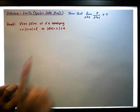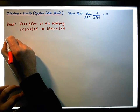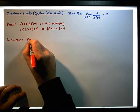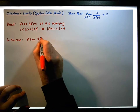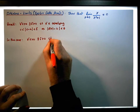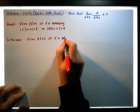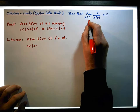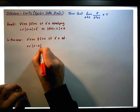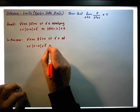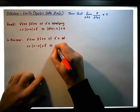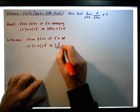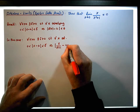In this case, what we'd like to show is: for each and every epsilon greater than 0, there exists a delta greater than 0, such that for each and every x satisfying the condition that 0 is less than the absolute value of x minus 0 — since x is tending to 0 — and less than delta, this implies that the absolute value of x over x squared plus 1 minus 0 is less than epsilon.